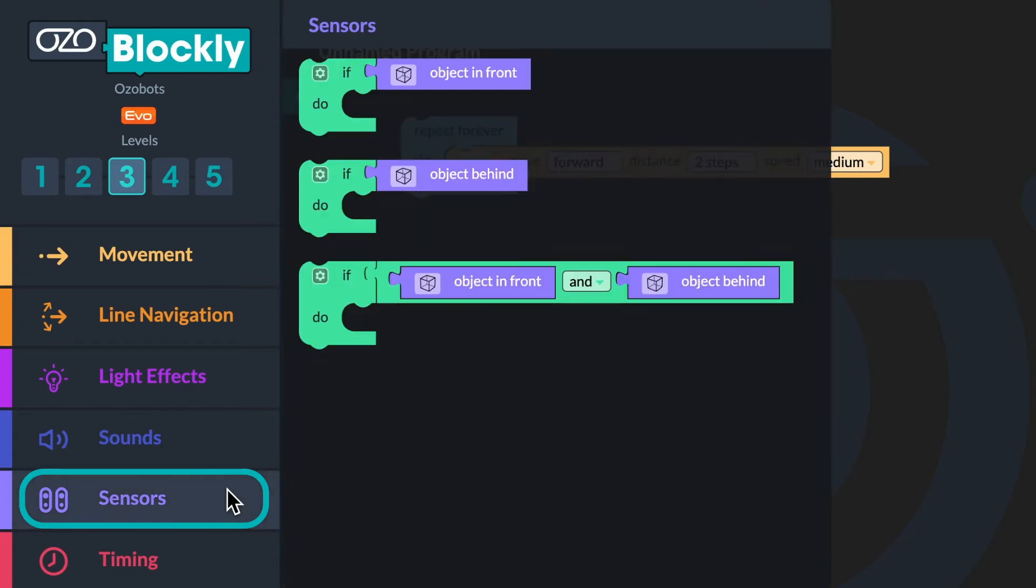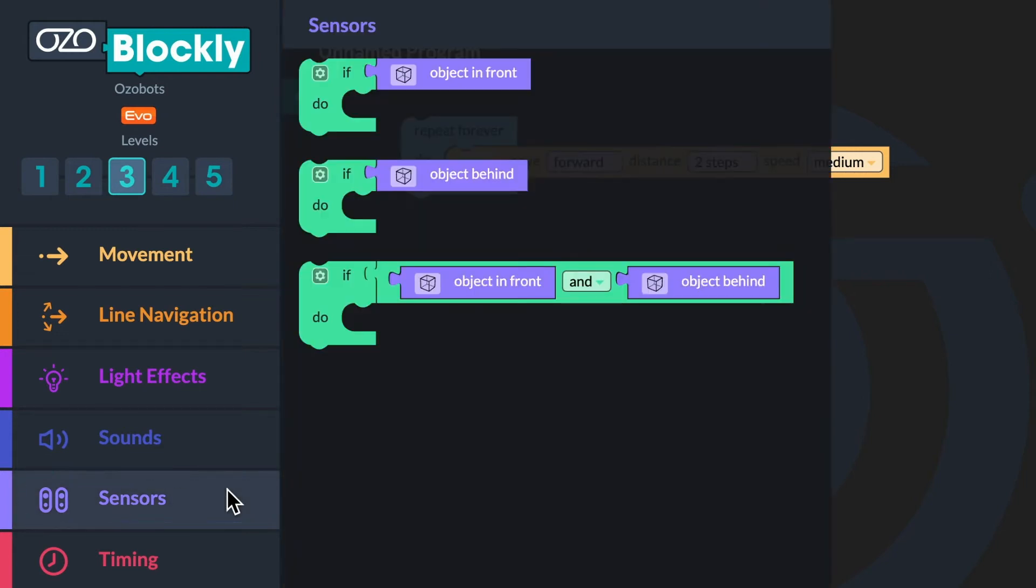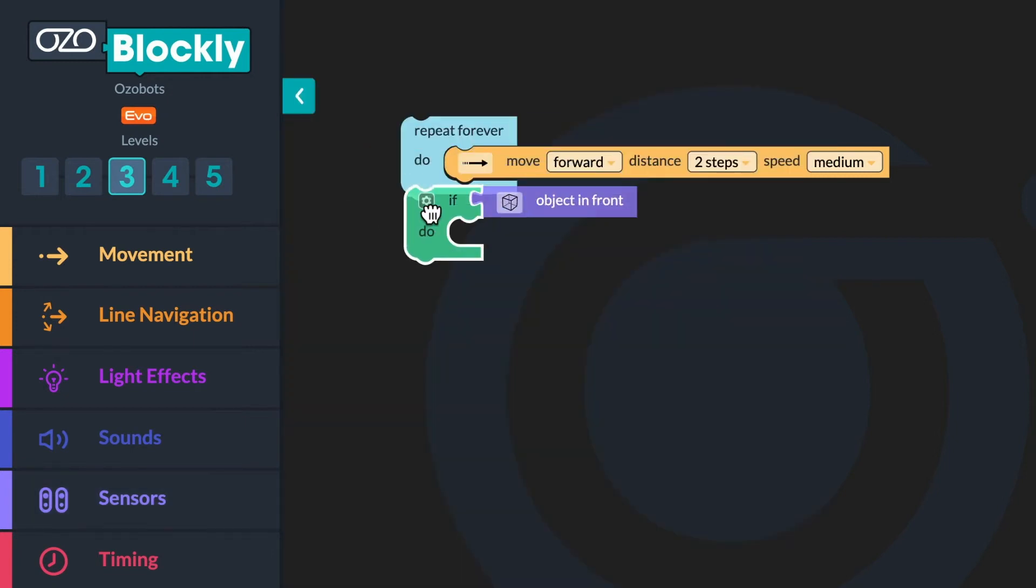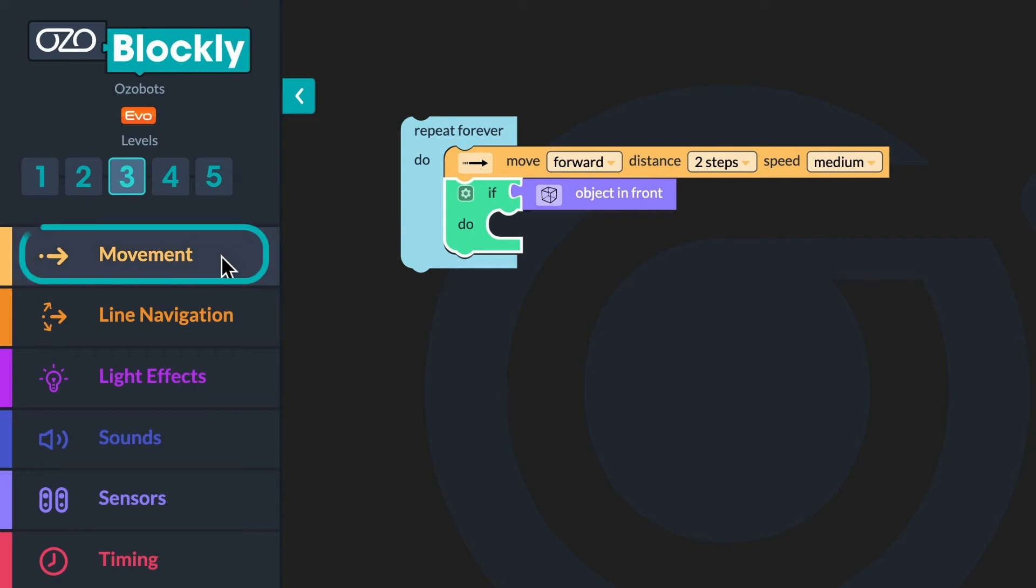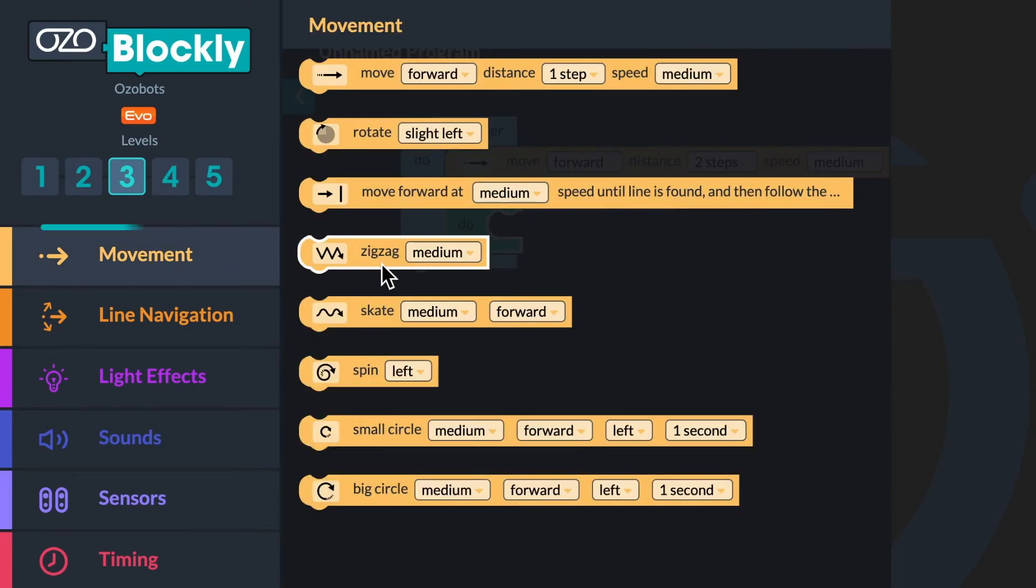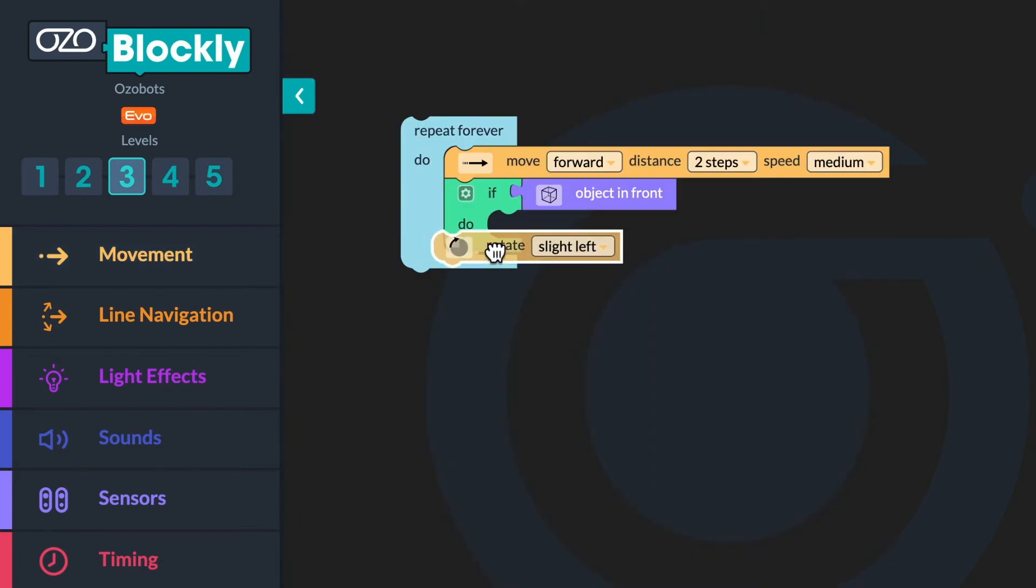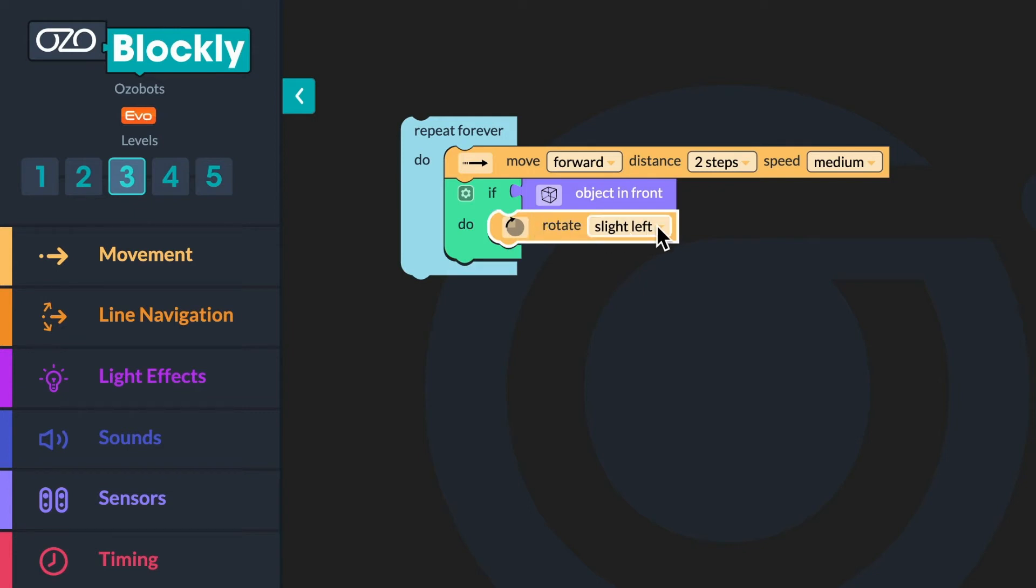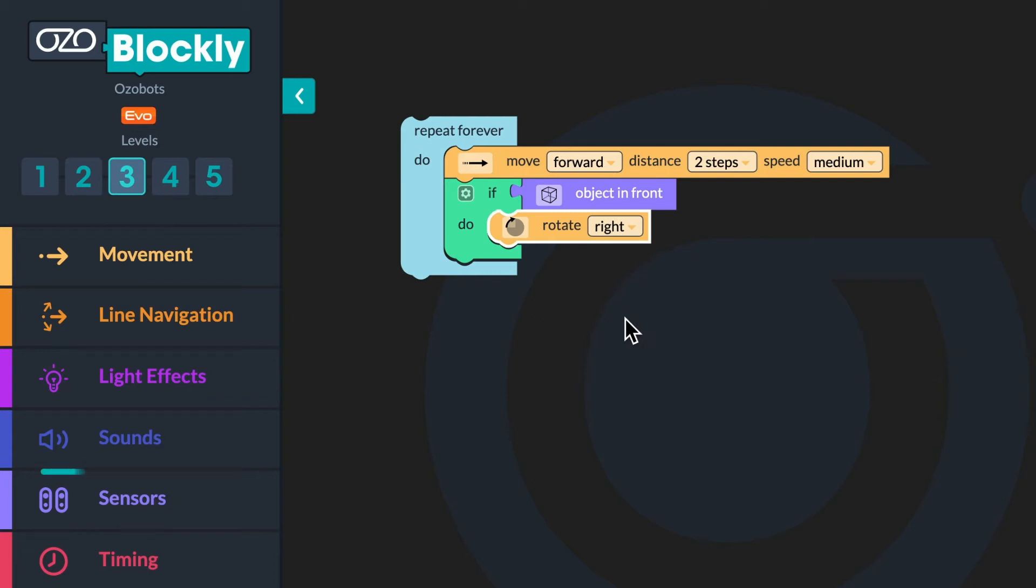Go to Sensors in the Block panel. Click an If Object in Front Do block and drag it inside the Loop block below the Move Forward block. Next, go to Movement. Click a Rotate Slight Left block and drag it inside the Conditional block. Then use the drop-down menu to change Slight Left to Right.